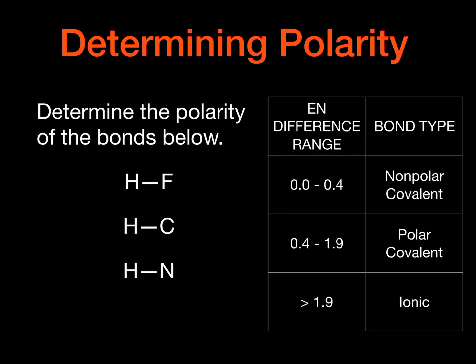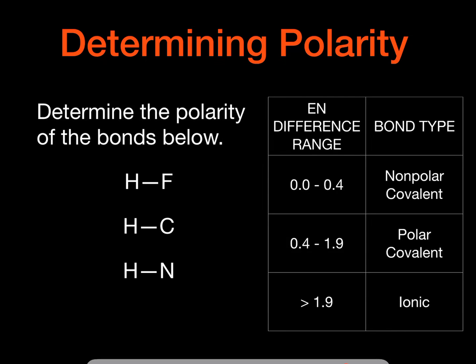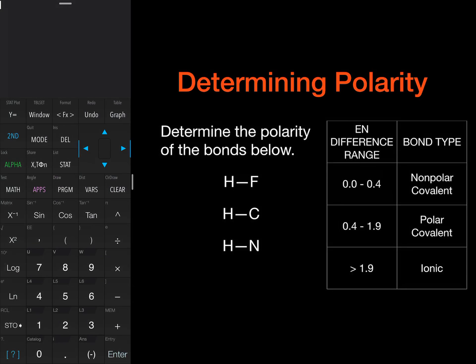So the first thing we want to take a look at is just determining polarity based on some electronegativity differences. And so we have these ranges, and then it gives us kind of a bond type. This doesn't work out perfectly, but this is one way that we can evaluate based on some numerical values. So I'm going to grab my calculator here. So we want to determine the polarity of these bonds below. We're just looking at a bond between two different elements.